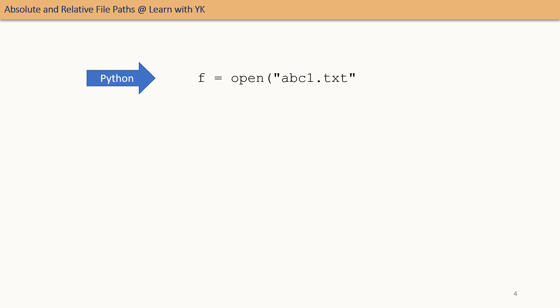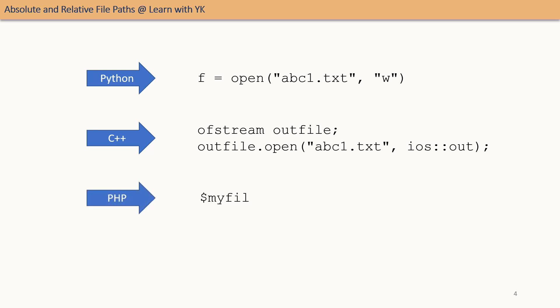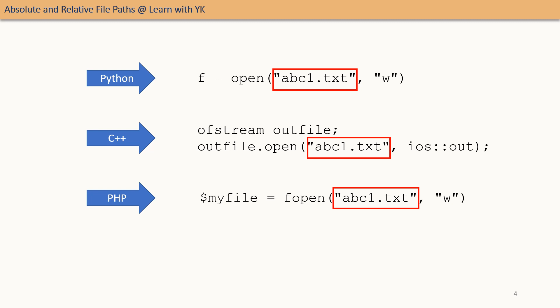Suppose we are writing code to create the file abc1.txt. The code in Python is this one, and the code in C++ is this one. What we are focusing on is how the file is referenced in the code. In these examples, we are referring to the file simply as abc1.txt. When any of these codes is executed, the file will be created in the same folder where the program is saved. Similarly, code reading abc1.txt will look for the file in the same folder where the code is stored. If the file is not found there, it will cause a runtime error. Such a reference is called a relative reference — relative means with respect to the code.